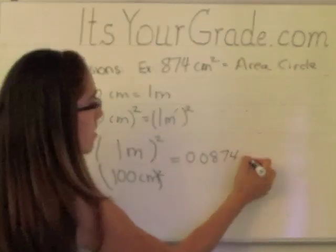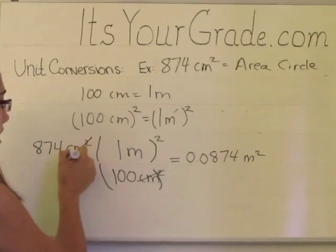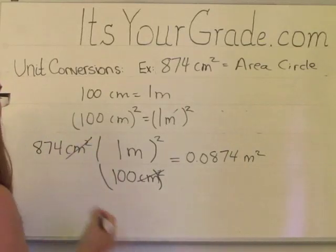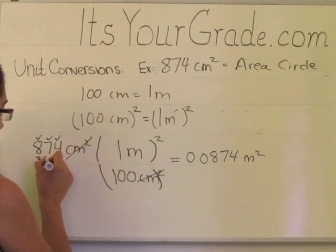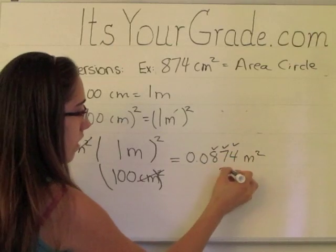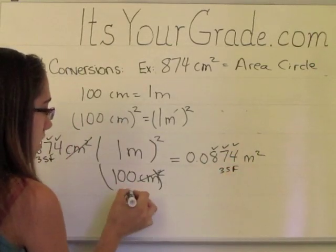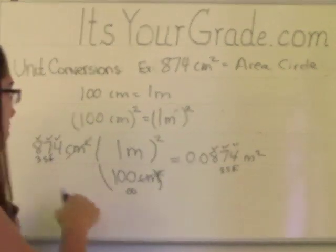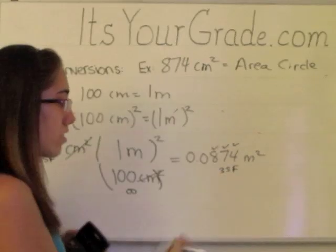This is meters squared, because the centimeters squared cancels here. So now we need to check for significant figures. 1, 2, 3 significant figures here. 1, 2, 3 significant figures in our answer. Because this is an exact value here, so it's infinite number of significant figures. You can leave your answer like this.